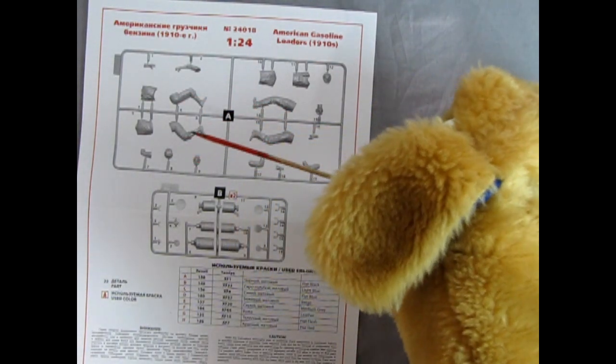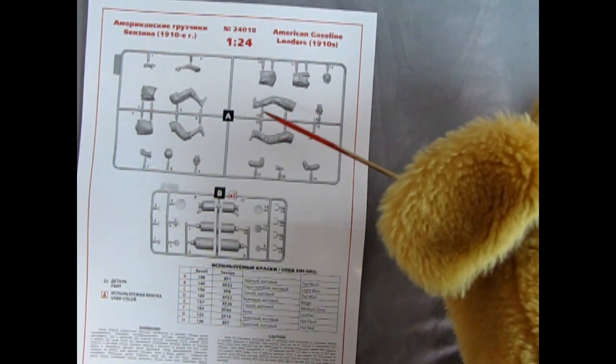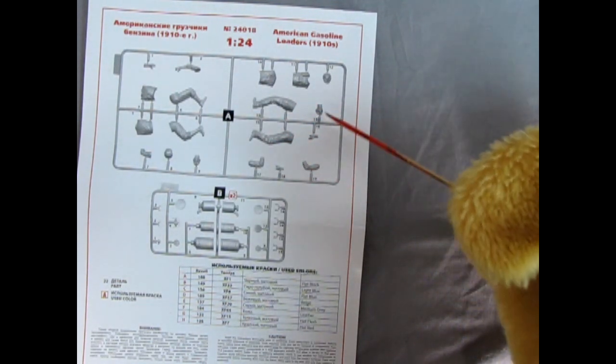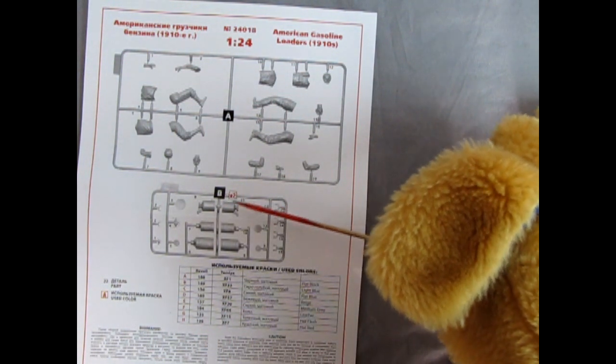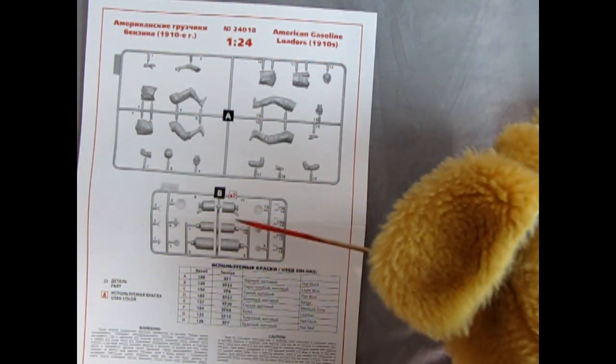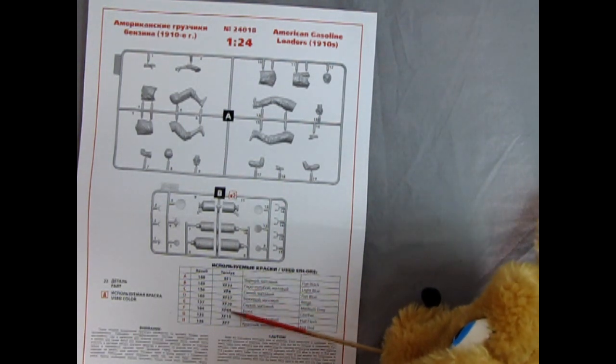So parts tree A shows the legs and the body portions of each of the men and they got their heads in there and everything else and you actually get two of B and that's all your fuel tanks of the vintage era and then down here you have paint call outs for everything.